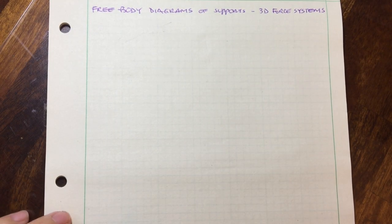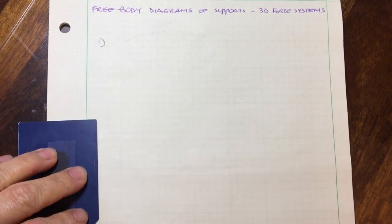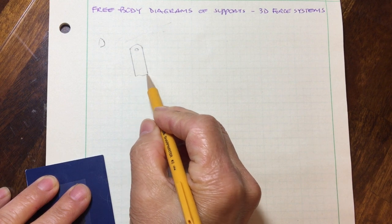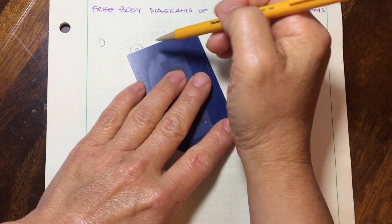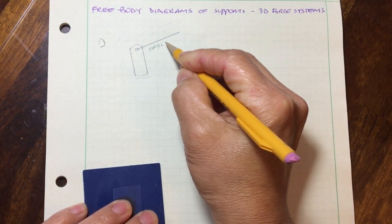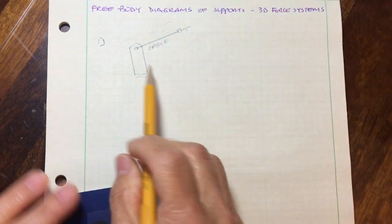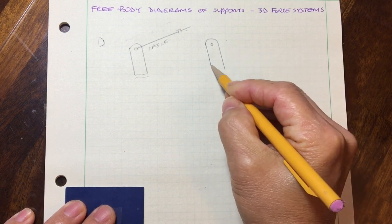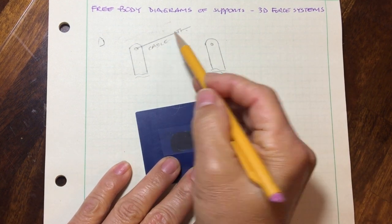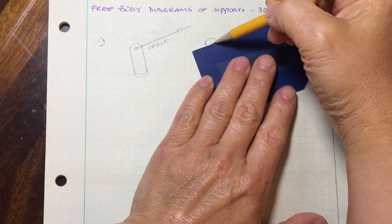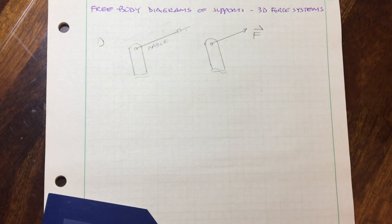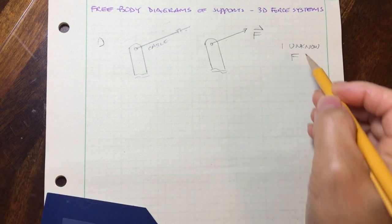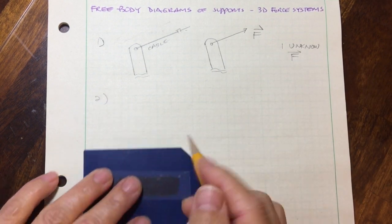Free body diagrams of supports for 3D systems. Suppose we have a support structure connected to something else, which supports a cable going in a particular direction. To draw the free body diagram of this structure: cables can only experience tension, so it will pull on this structure. This consists of one unknown, which is the force F.